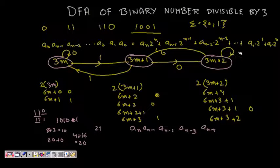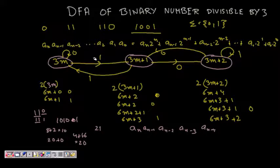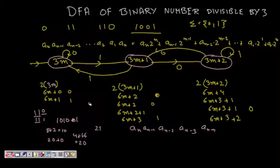So on seeing a 1 from state 3M+2, it remains there. This is our state machine for finding whether a number is divisible by 3.